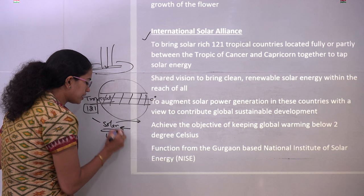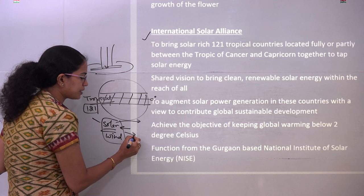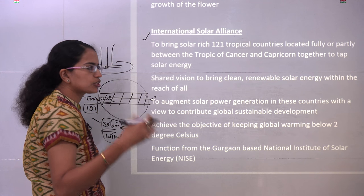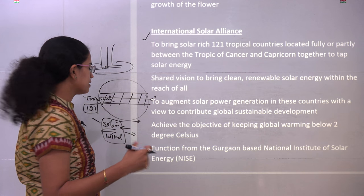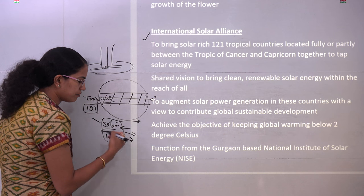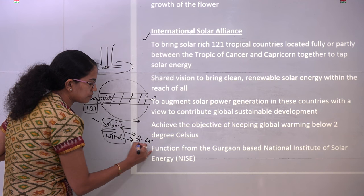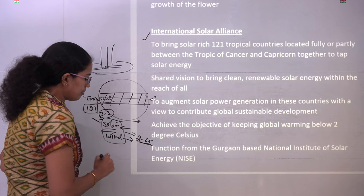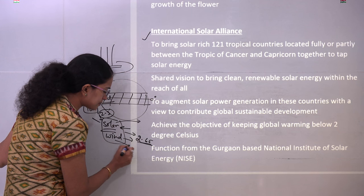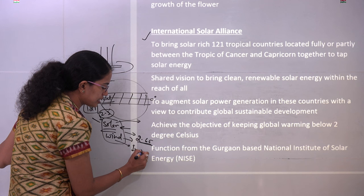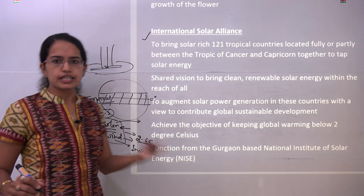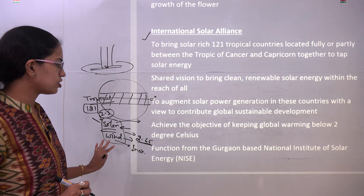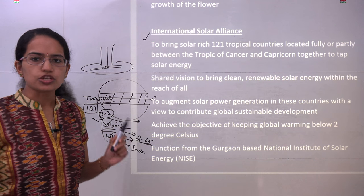Nowadays, solar and wind auctions are taking place, meaning suppliers are bidding for the lowest price, and the one offering the lowest price is selected for supplying energy. Under wind energy, the recent bid is nearly 2.65 rupees per unit. For solar, the range is from 2 to 3 rupees per kilowatt. The four major companies under wind energy are INOX, Green Infra, Orange Sion, and Renew Power, working on wind energy auctions.